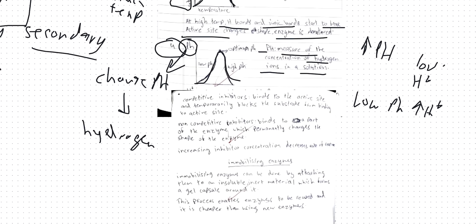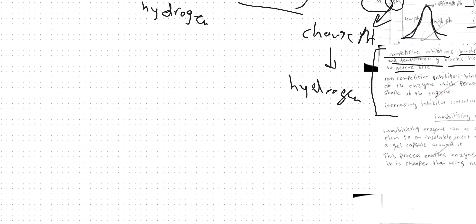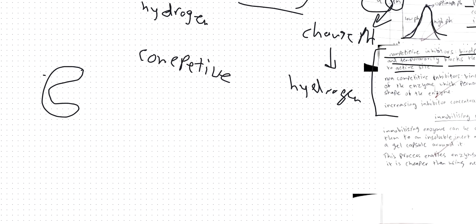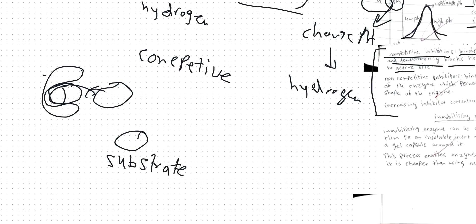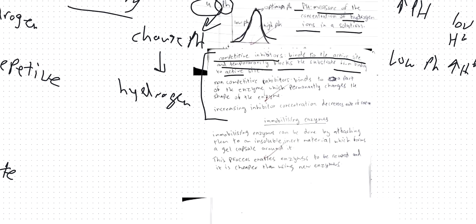Moving on to inhibitors — there are two types of inhibitors. The first is competitive inhibitors, which would bind to the active site and temporarily block the substrate from binding to the active site. Inhibitors stop enzyme activity. The competitive inhibitor is complementary to the active site, so it binds to the active site and blocks the substrate from binding there. Non-competitive inhibitors bind to a different part of the enzyme, so they don't bind to the active site.